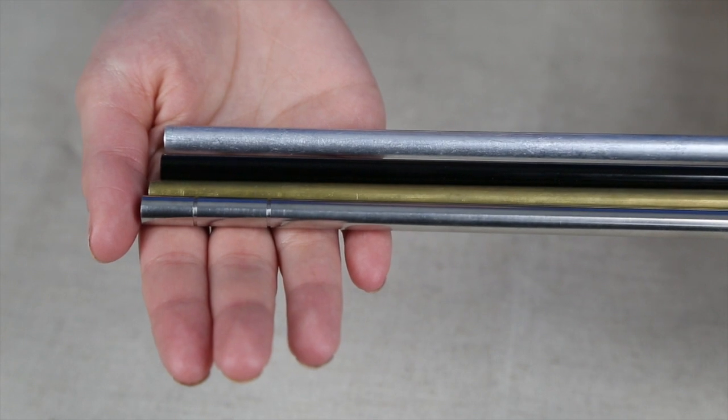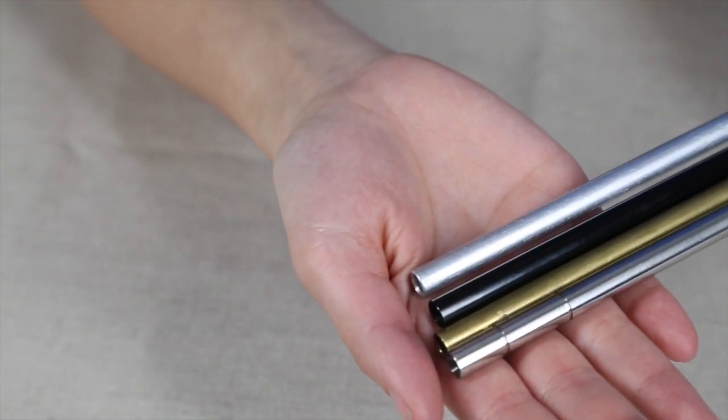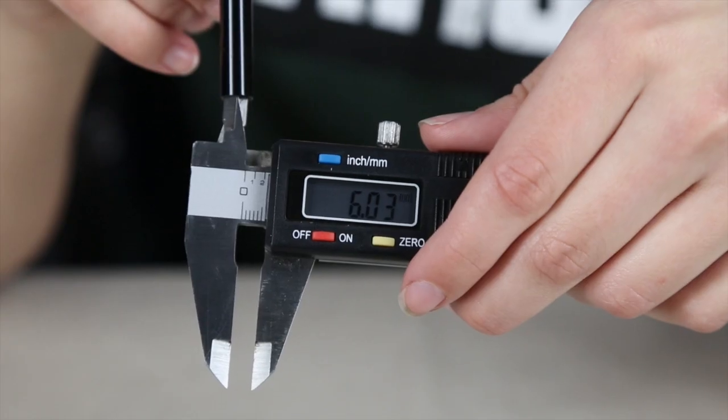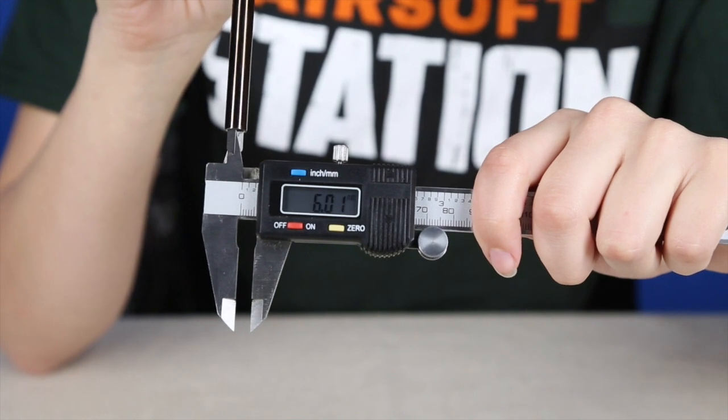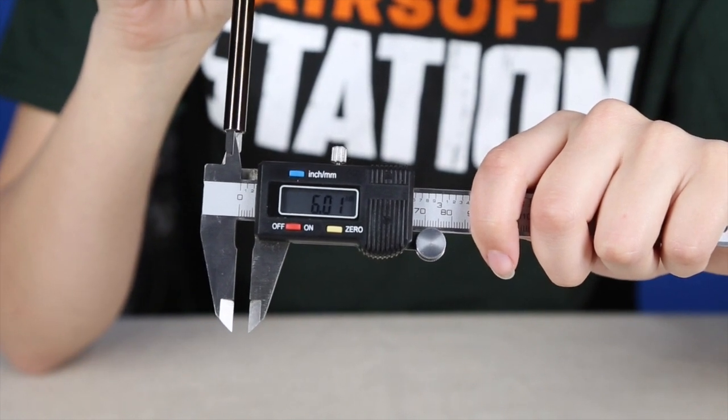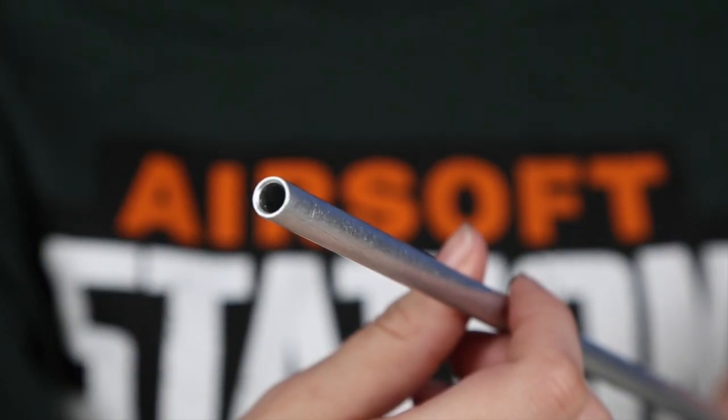An easy fix is to change your current barrel for a smaller diameter one, also known as a tightbore barrel. These are from 6.04 mm to 6.01 mm. The tighter bore helps keep the BB from bouncing inside the barrel as it travels down the length of the barrel, and projects the BB more consistently.